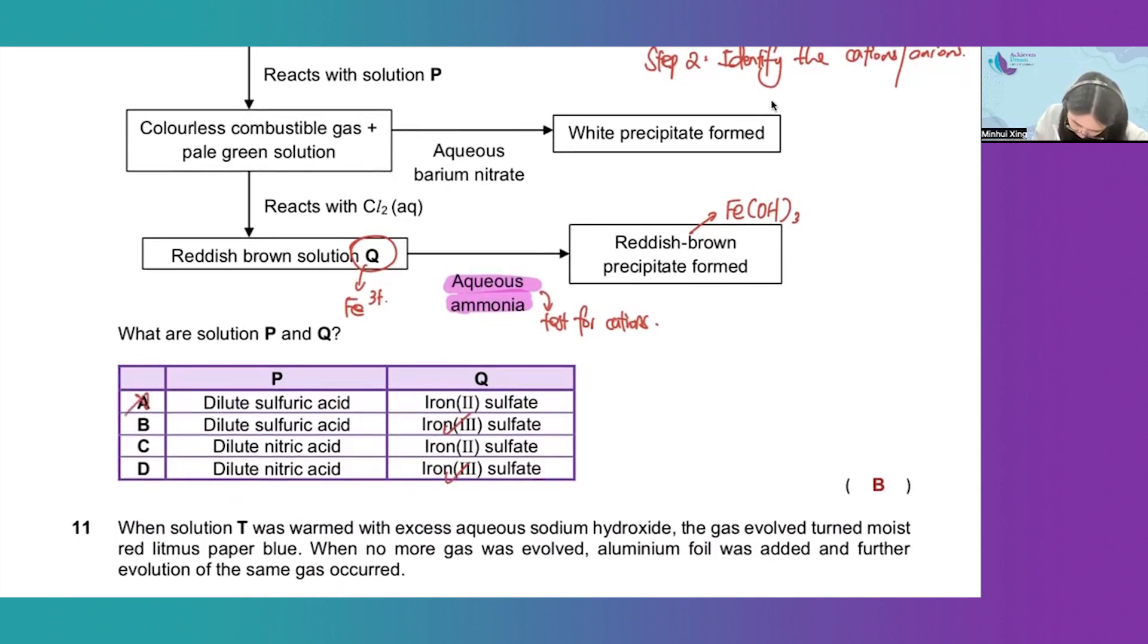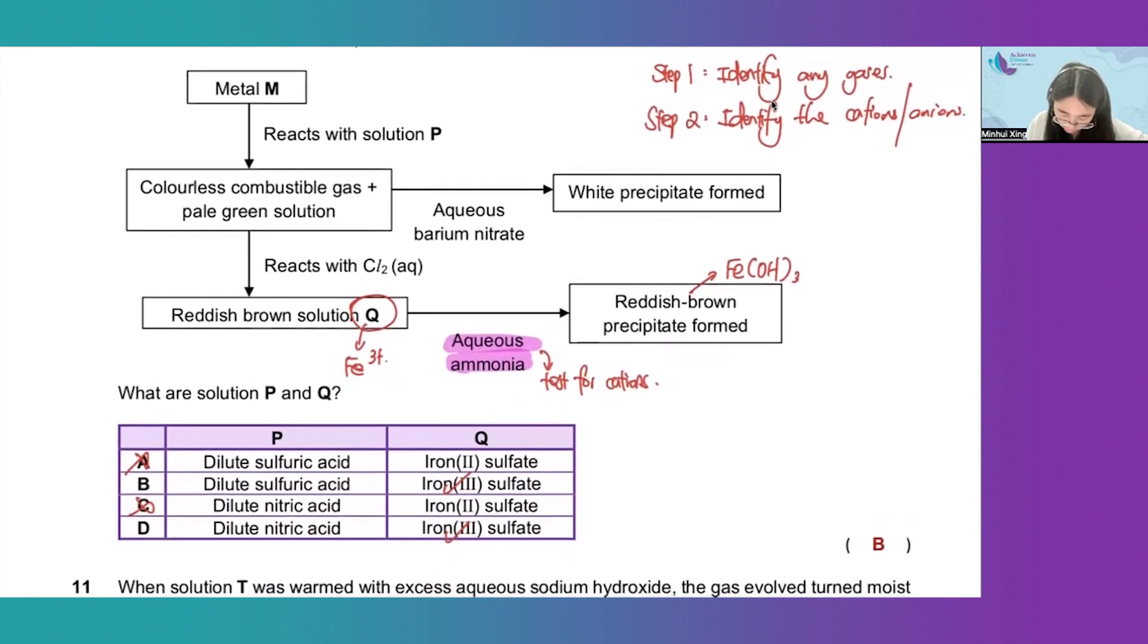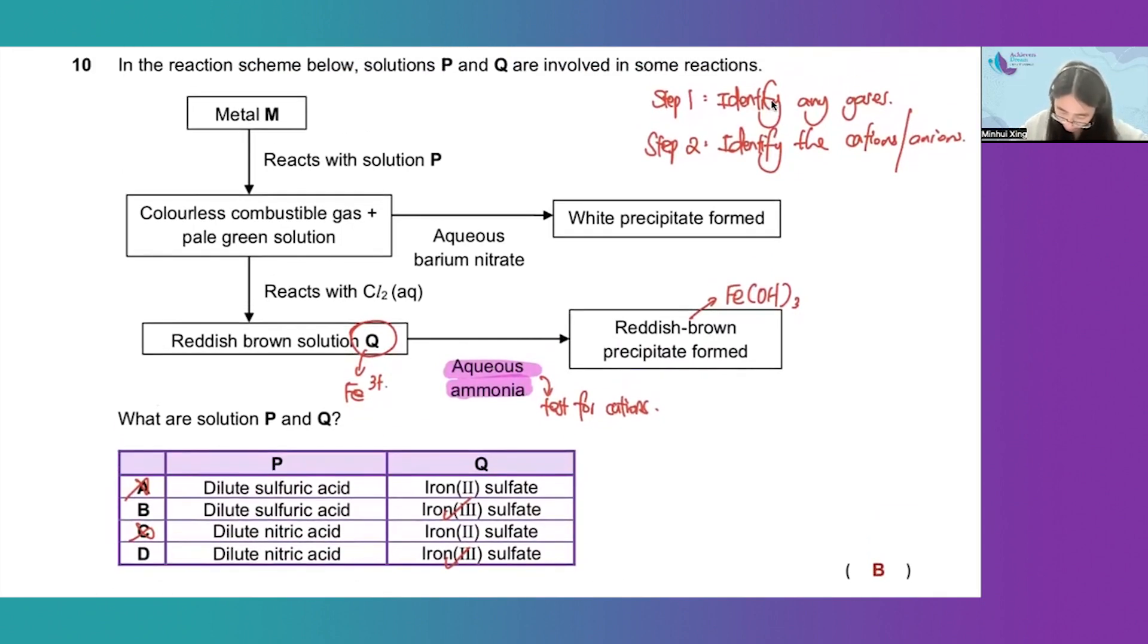The answer will be option B or option D. Then we can look at the second row.